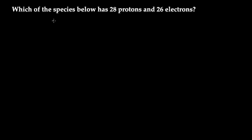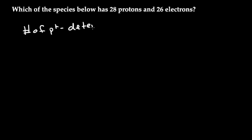In this question, we want to know what species has 28 protons and 26 electrons. To do this problem, we need to know that the number of protons is going to determine the atom that we're talking about — it determines the atom.